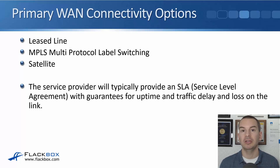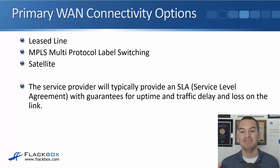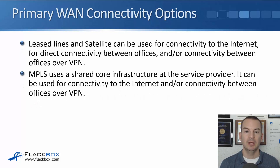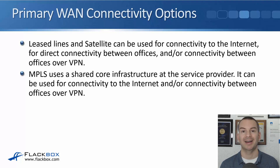But far more often your WAN connections are going to be offered by a service provider. What options are available really depends on what country you're in and what the service providers there can do. With these primary connections, the service provider will typically provide an SLA — a service level agreement — with guarantees for the uptime of the line and also for traffic quality, meaning the delay and the loss on the link. Leased lines and satellite can be used for connectivity to the internet, for direct connectivity between offices, and/or connectivity between offices over VPN. MPLS uses a shared core infrastructure at the service provider, so it can be used for internet connectivity and/or connectivity between offices over VPN.